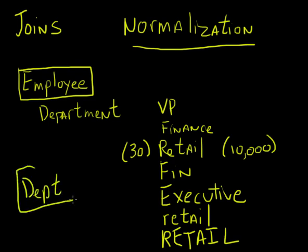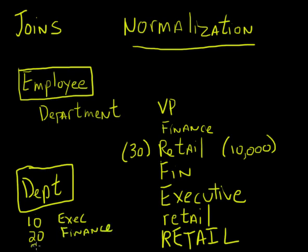So I might break this department out into its own table. I'll put a box around it to show it's a table. I might have 10 as my executive department, 20 as my finance department, and 30 as my retail department. This is normalization - breaking out redundant data so we don't have it repeated inside our database. If I break this into its own table, I'm simply storing numbers, and it makes it easier to ensure consistency.